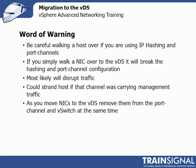Simple example. vSphere hosts with four NICs — let's say all four are in a single vSwitch using IP hashing. To use IP hashing, all those NICs have to be in a port channel on the physical switch. What happens if I walk two of those NICs over to the distributed switch but don't change the physical switch? The physical switch doesn't know that I've pulled two of those NICs out to basically create a separate channel. Things break.